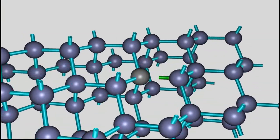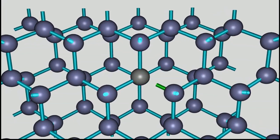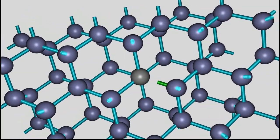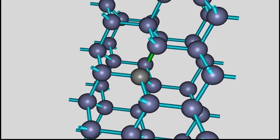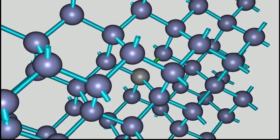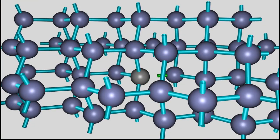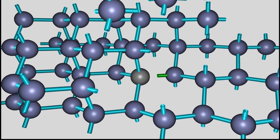At the previous video chapter we discovered the drifting of holes inside of a P-type semiconductor while connecting the crystal to a DC voltage source. Even in the absence of an electric field, the holes can move through the crystal lattice.